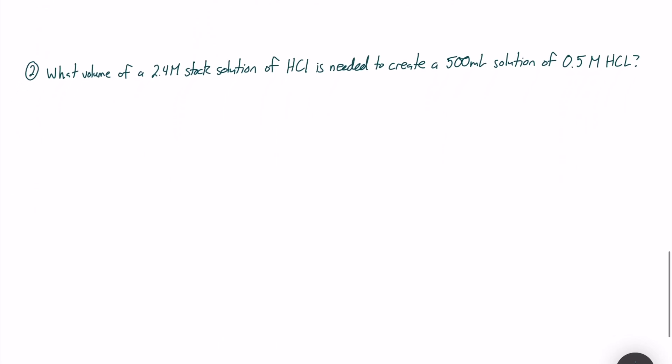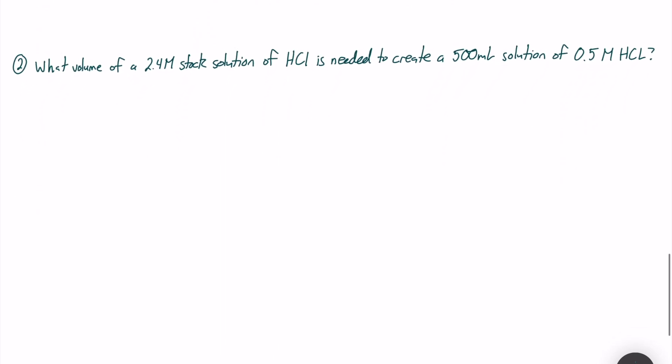Let's move on to example number two. It asks what volume of a 2.4M stock solution of HCl is needed to create a 500 milliliter solution of 0.5M HCl.